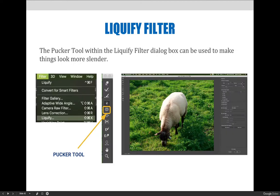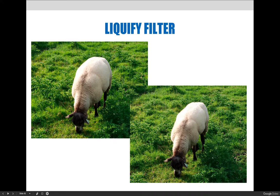The Pucker tool within the Liquify dialog box can be used to make things look more slender. A lot of times the Pucker tool is used when retouching photographs or portraits to make people look skinnier than they actually are. The Pucker tool is right below the clockwise spin tool. In this example I used it on a sheep — the original is a nice puffy sheep with a thick coat of wool, and I used the Pucker tool to make the sheep look skinnier than it actually is.